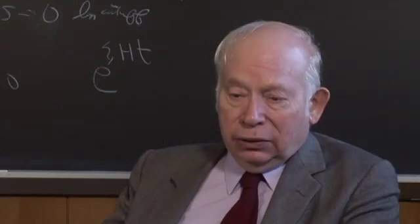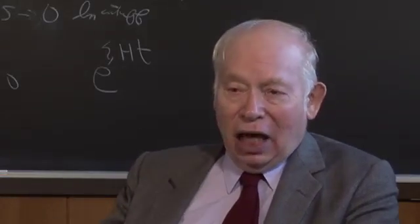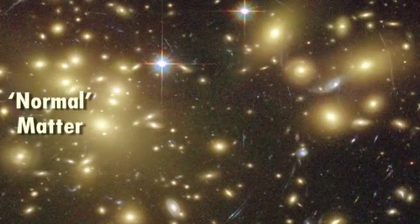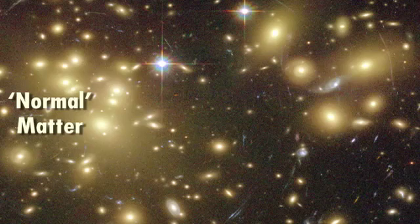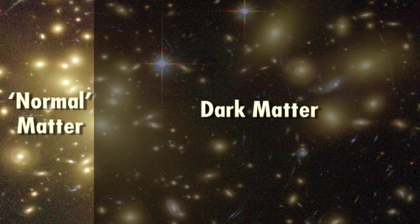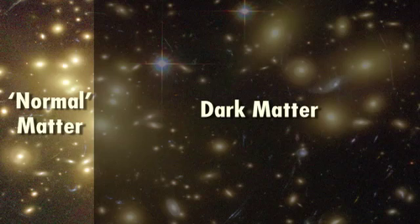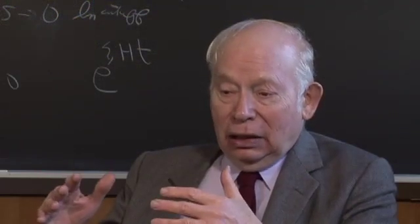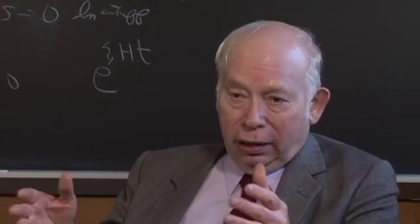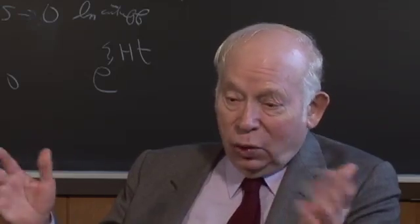It turns out that the total amount of matter of all kinds, ordinary and not ordinary, is about six times as much as the amount of ordinary matter. So the remaining five-sixths is something else. It's got to be something that we don't see because we're not seeing it. It's something that's out there. It's dark. That simply means we're not seeing it.